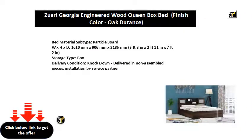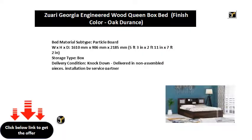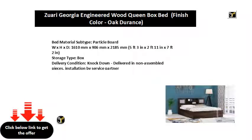Bed material subtype: particle board. W×H×D: 1610mm × 906mm × 2185mm, or 5 feet 3 inches × 2 feet 11 inches × 7 feet 2 inches. Storage type: box.